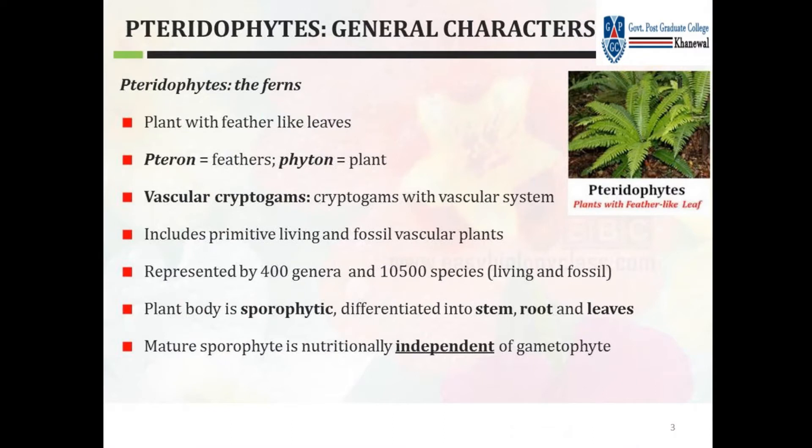First of all, what are Tracheophytes? They are the first plants with feather-like leaves. 'Pteron' means feather and 'phyton' means plant. These are vascular cryptogams — cryptogames with a vascular system — including primitive living and fossil vascular plants, represented by about 400 genera and 10,500 species.